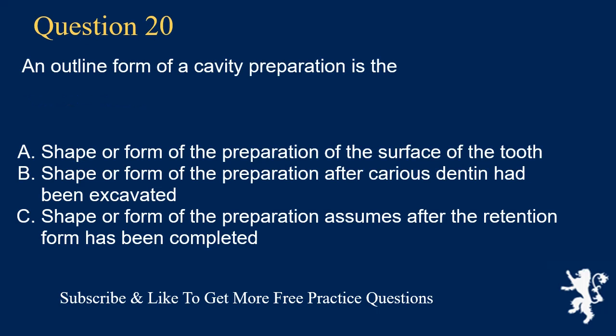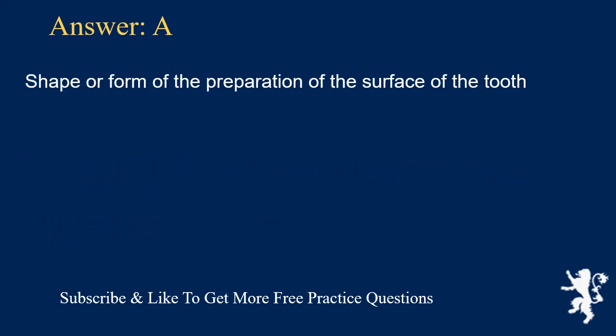Question 20. An outline form of a cavity preparation is the: A. Shape or form of the preparation on the surface of the tooth, B. Shape or form of the preparation after carious dentin has been excavated, C. Shape or form the preparation assumes after the retention form has been completed. Answer: A. Shape or form of the preparation on the surface of the tooth.